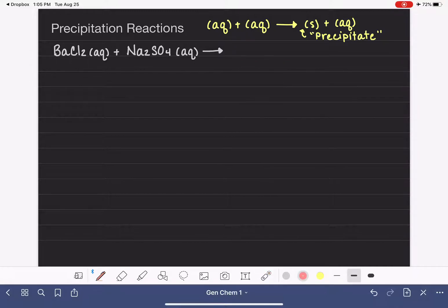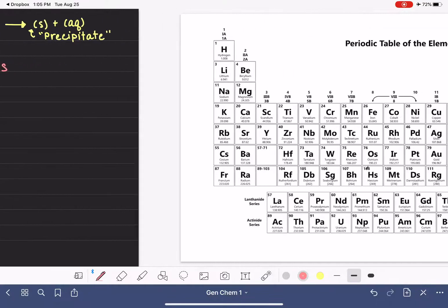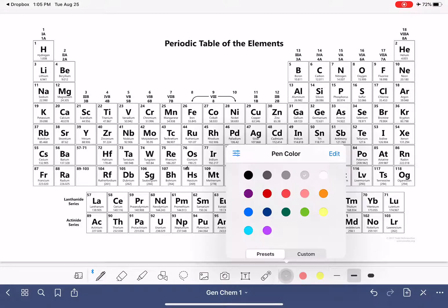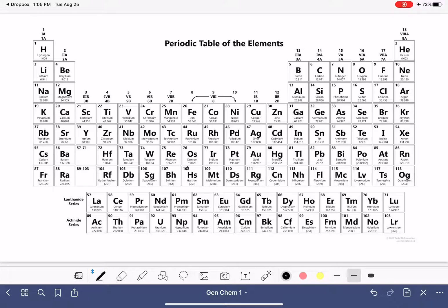When you're being asked to predict the products of a precipitation reaction, the first thing that you should do is separate each one of the reactants into cations and anions. Now this is going to require you to remember a few things that we've learned earlier. One thing that you're going to be required to remember is the standard charges on our ions. So if we go to a periodic table, just as a reminder, the ions that are in the first column, these all have plus one charges.